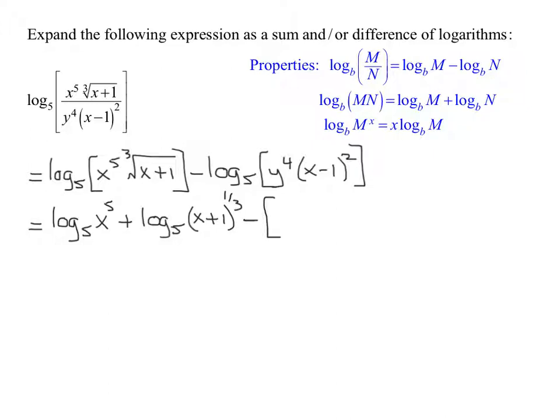Now inside, I'm going to have to break up this product. So I have to have a negative on the outside minus. Now both of these logs inside the parentheses are going to be positive. So it's log to the base 5 of y to the 4th, plus log to the base 5 of x minus 1 all squared.